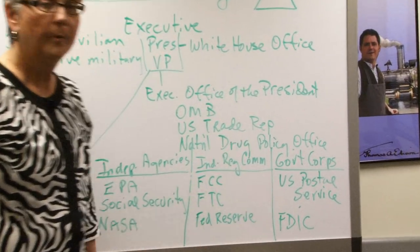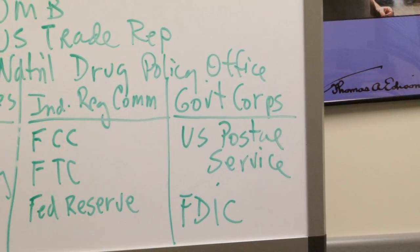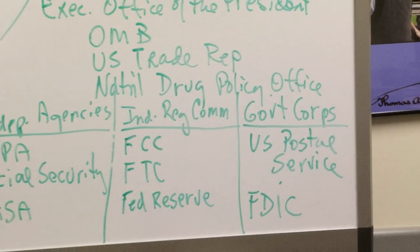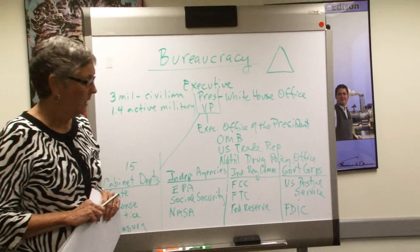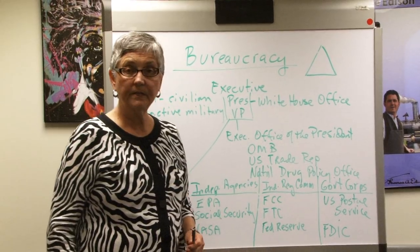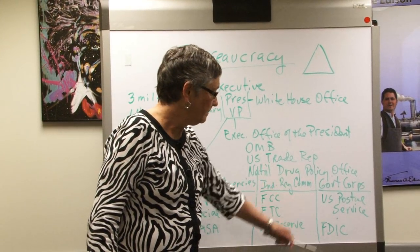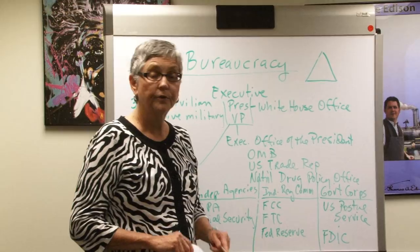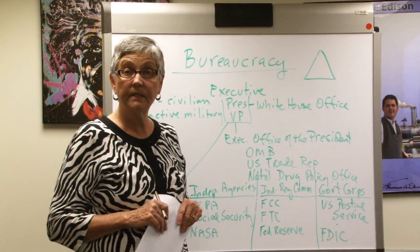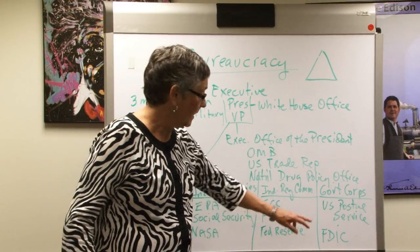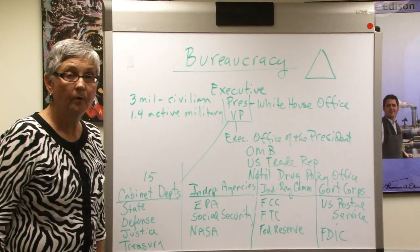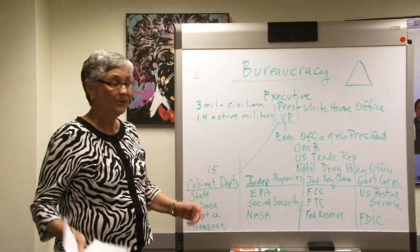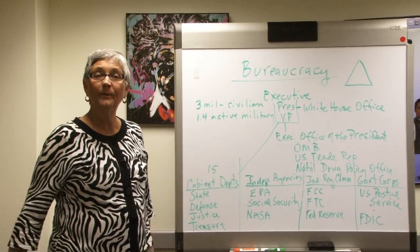The last group are government corporations. Examples are the U.S. Postal Service and the FDIC — the Federal Deposit Insurance Corporation. These are government agencies that start out with seed money from the government but are supposed to act like a corporation, putting profits back into their activity. The FDIC guarantees our deposits in banks so that if a bank fails, you won't lose all your money. All very important in the federal bureaucracy. There are bureaucracies in all the states and cities too — so read and fill in the blanks, and we'll see you next time.